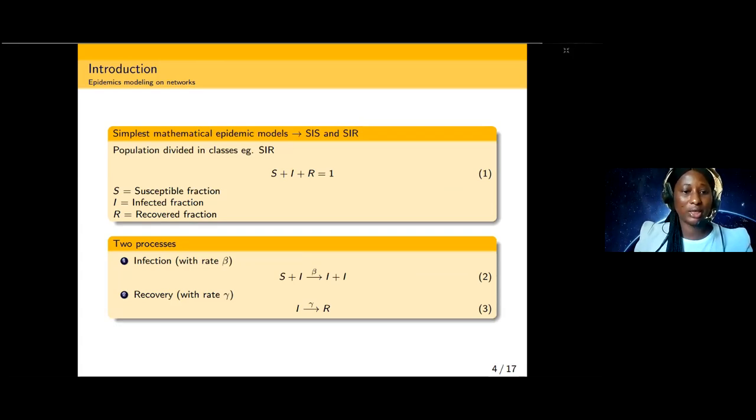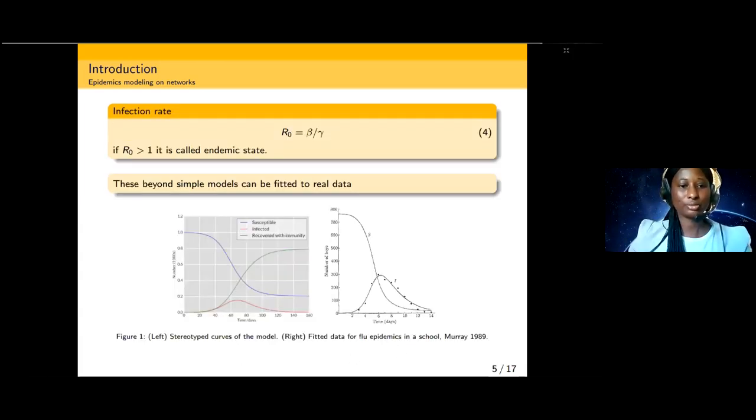In equation two we have our beta, which is the transmission rate—the rate at which the susceptible is being infected with a particular disease. Then we have gamma, the recovery rate at which the infected class recovers from a particular infection. In equation four, we have a reproduction number to be beta over gamma.